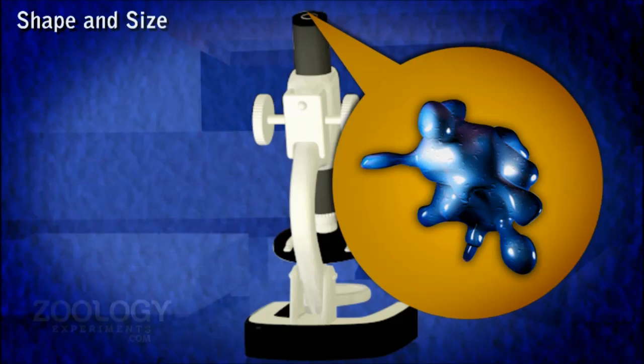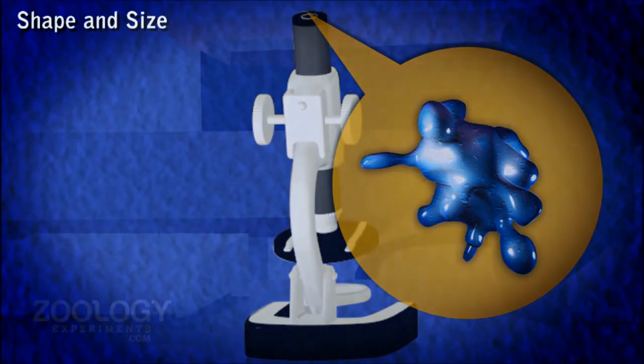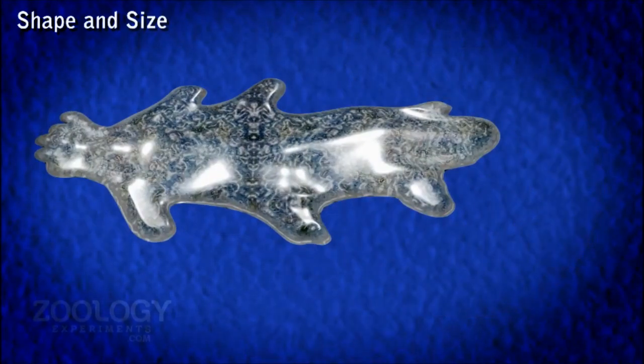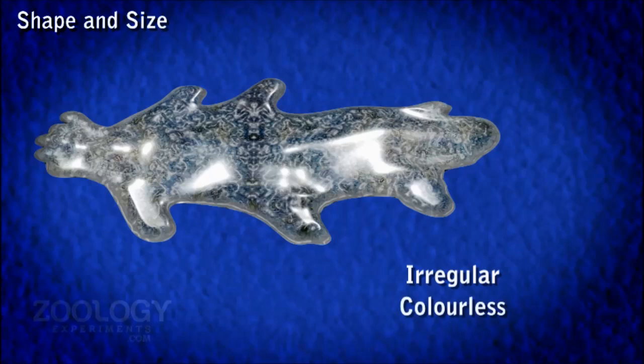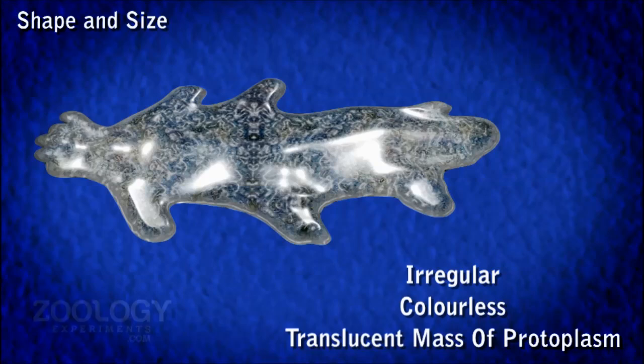The larger amoeba proteus is just visible as a whitish spot by naked eye. Under the microscope, it appears as an irregular, colorless and translucent mass of protoplasm.